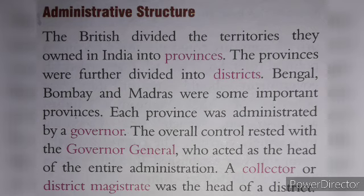The provinces were further divided into districts. Bengal, Bombay and Madras were some important provinces. Each province was administered by a governor. The overall control rested with the Governor General who acted as the head of the entire administration. A Collector or District Magistrate was the head of a district.